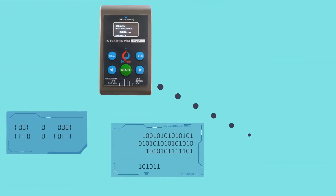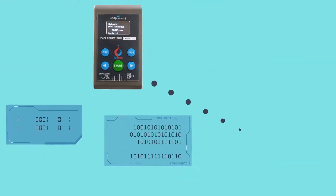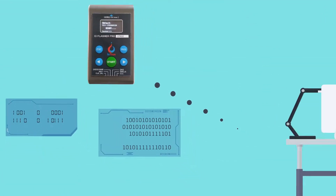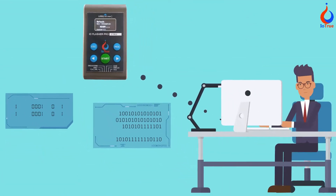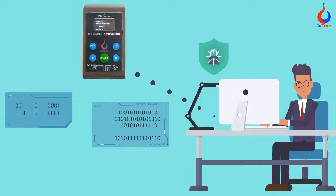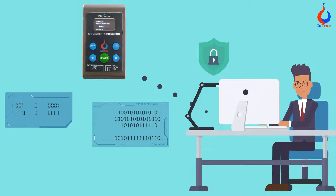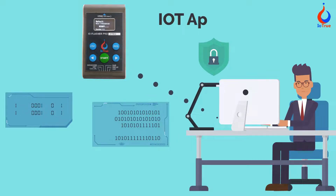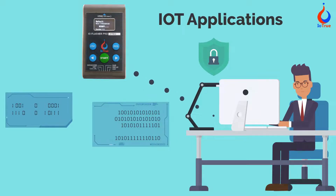IO Flasher can help to write randomly generated encryption keys of different sizes directly to your device without breaching security, which is very useful for the security of IoT applications.